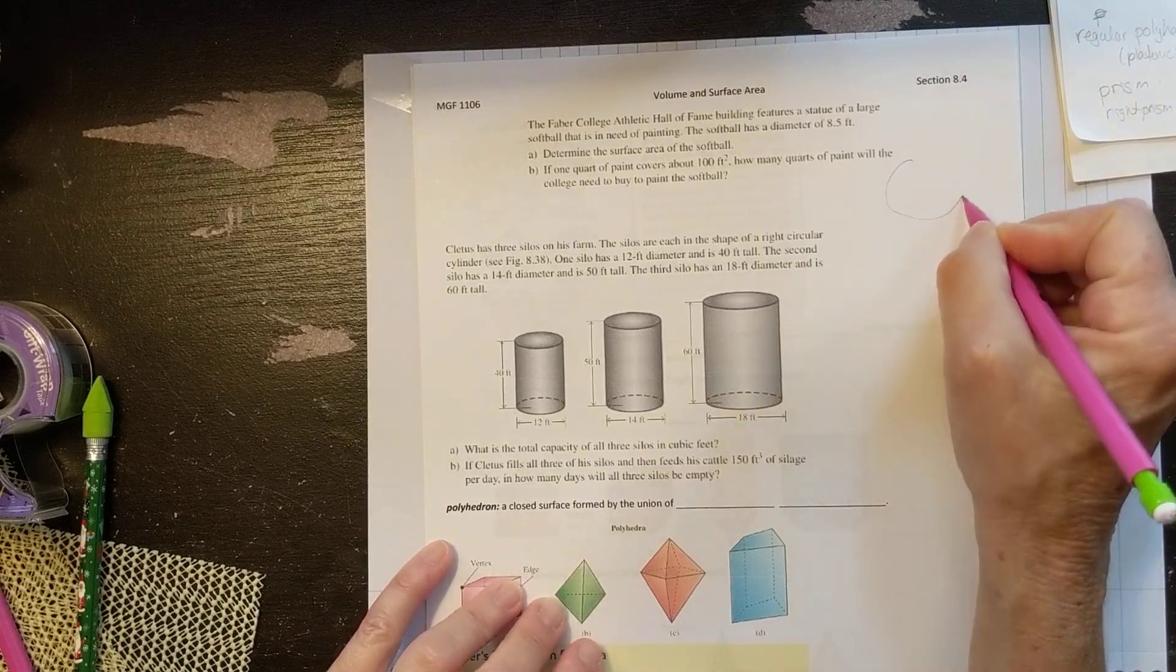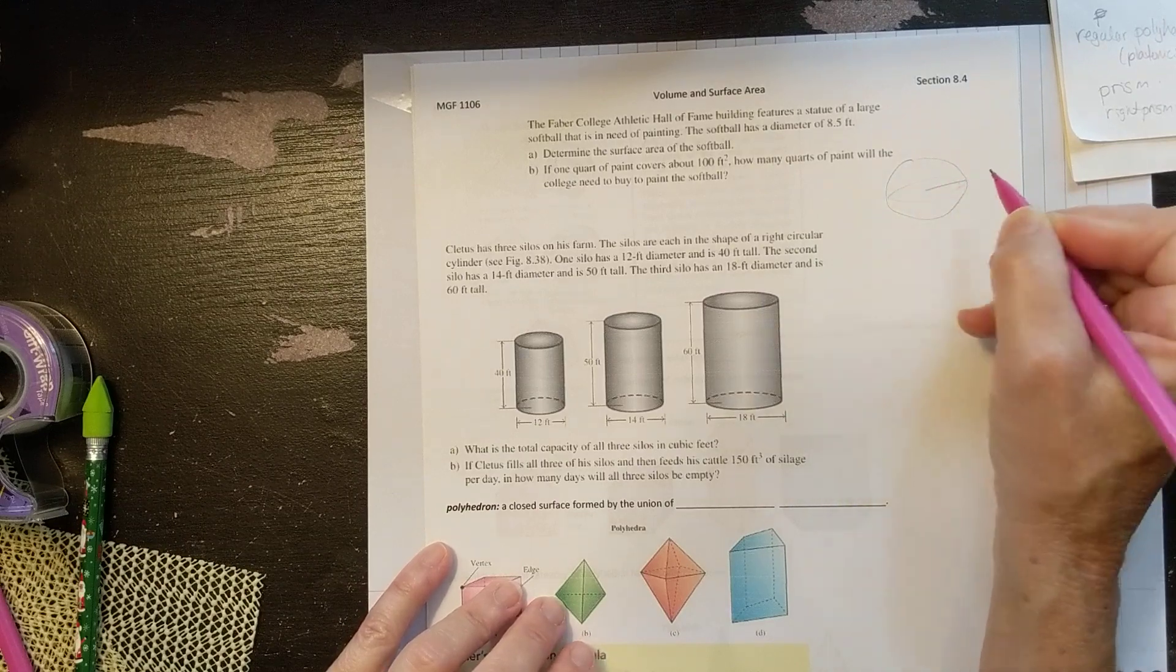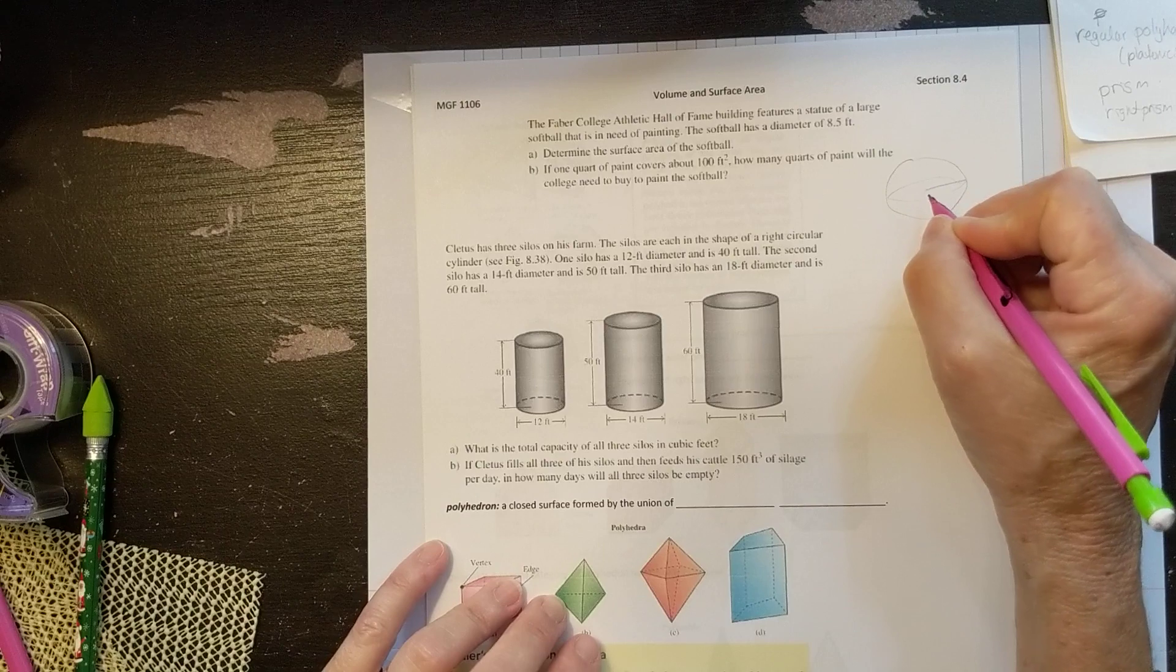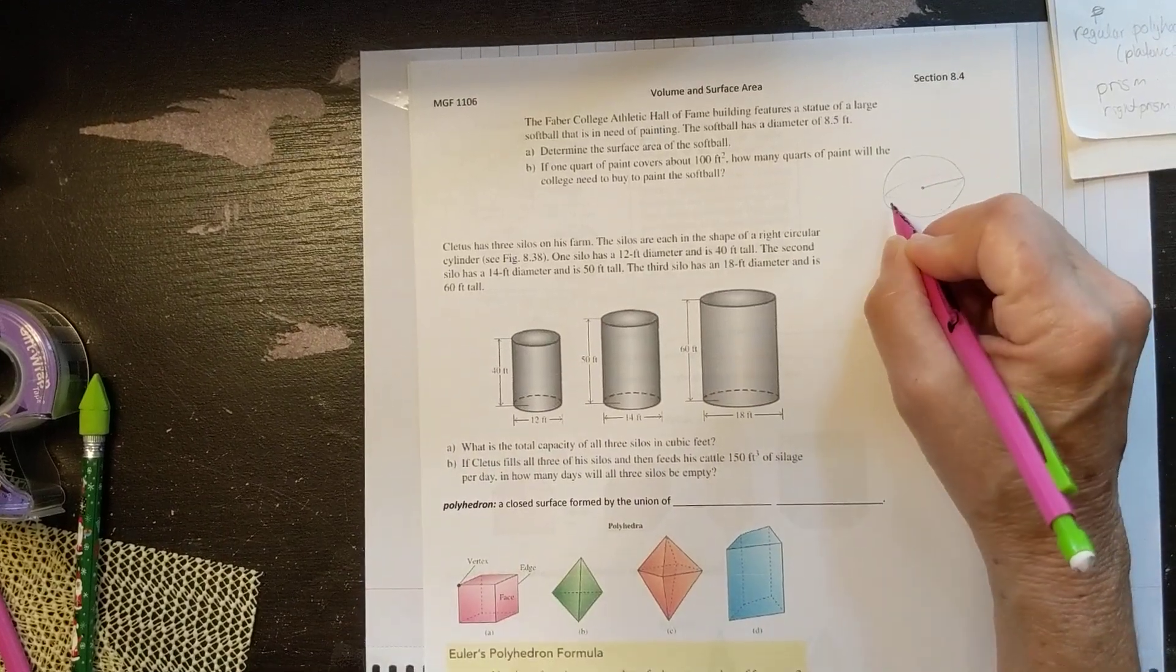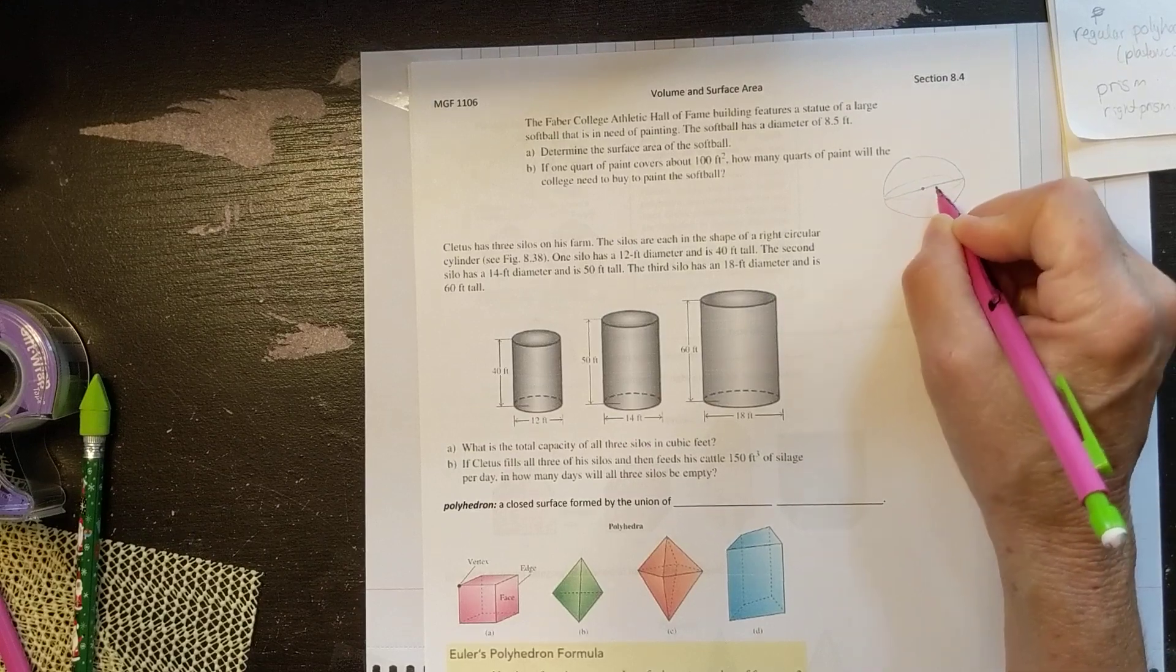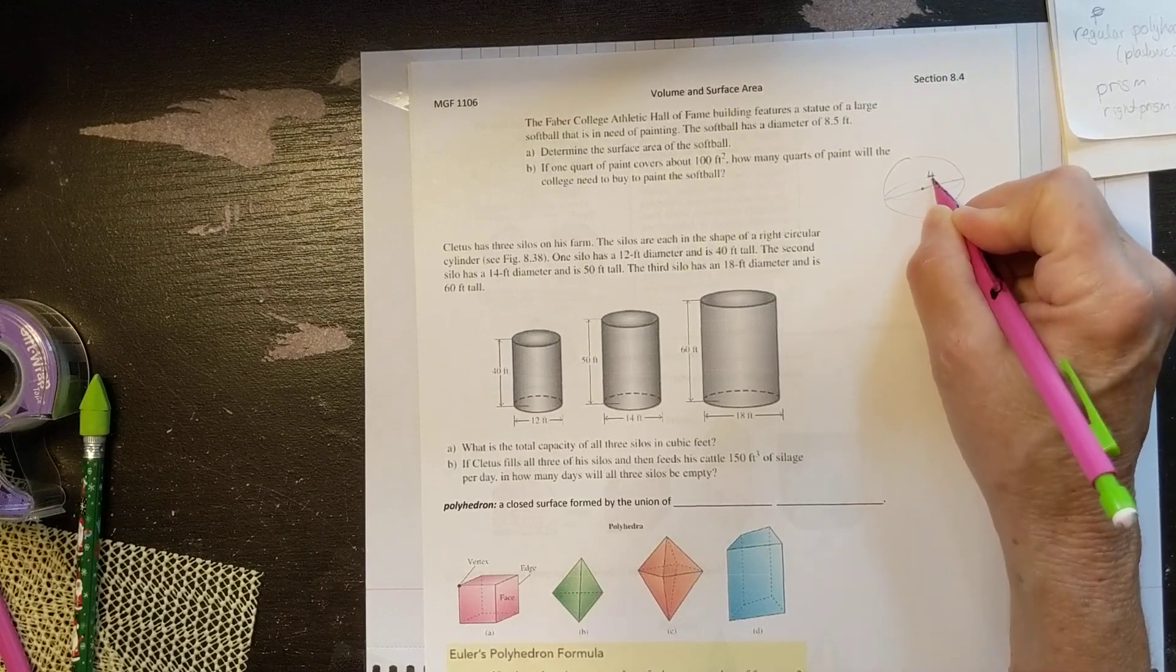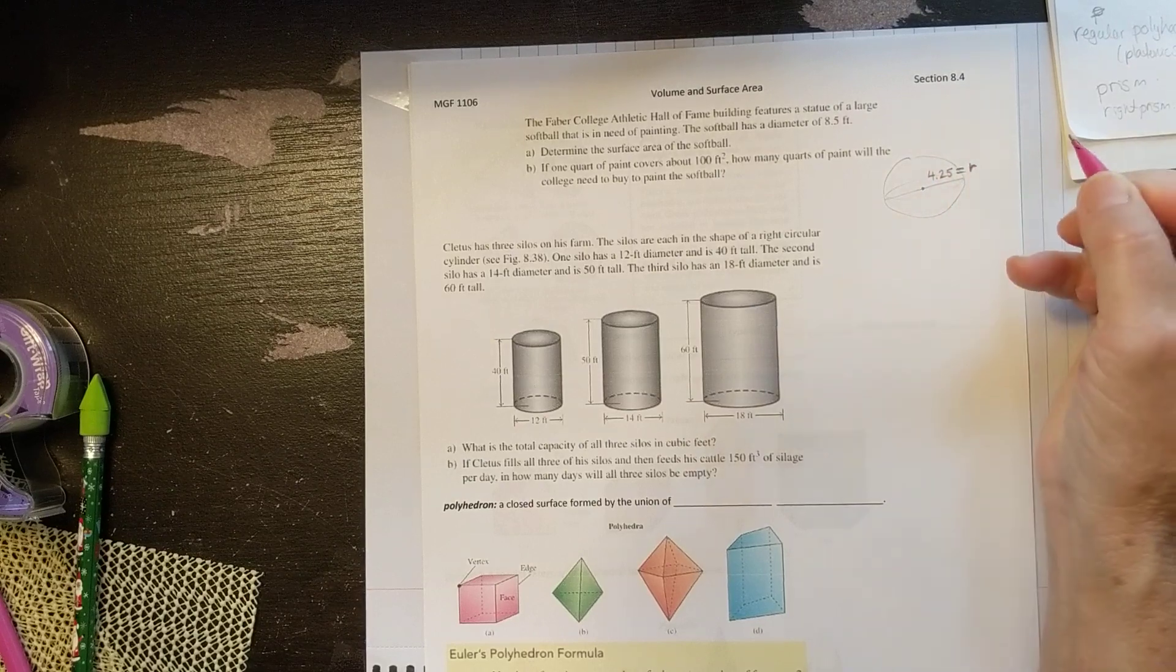Alright, so basically we have a sphere. That's what we have. A softball is a sphere. And it tells us it's got a diameter of eight and a half feet. So all the way from here to here is eight and a half. So half of that is going to be 4.25, which is the radius. That's what we know.